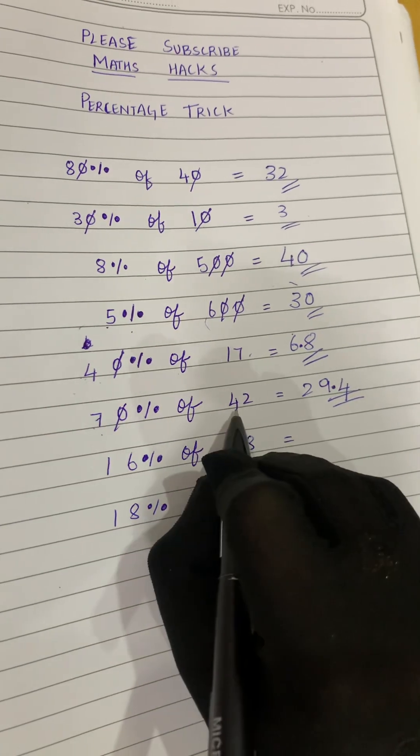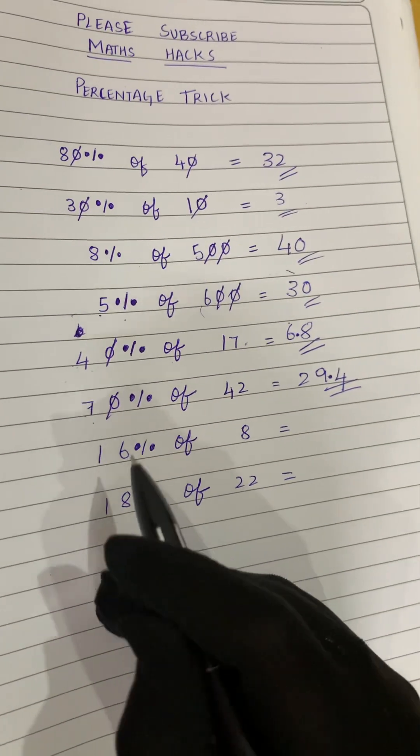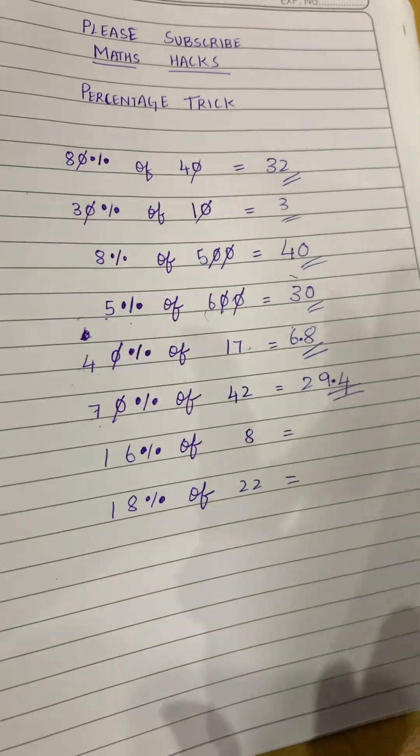So our answer is 70 percentage of 42 is 29.4, our final answer.